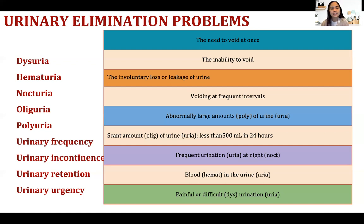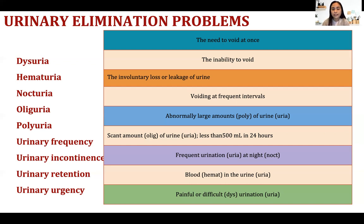Frequent urination at night is called nocturia. Blood in the urine is hematuria — hema means blood. Painful or difficult urination is called dysuria — the keyword is difficult, starting with D. These are the urinary elimination problems you need to take note of.